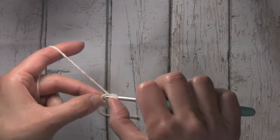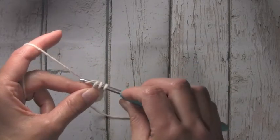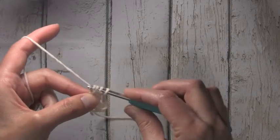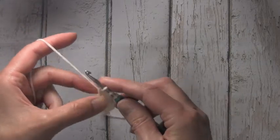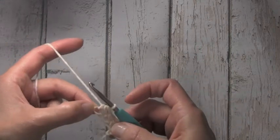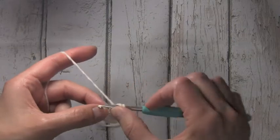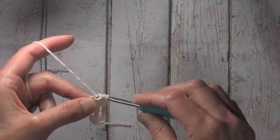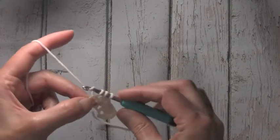Yarn over, insert my hook into that loop, yarn over, pull up a loop, yarn over, pull through, yarn over, pull through all three loops. And I'm going to continue this for however many my pattern calls for.